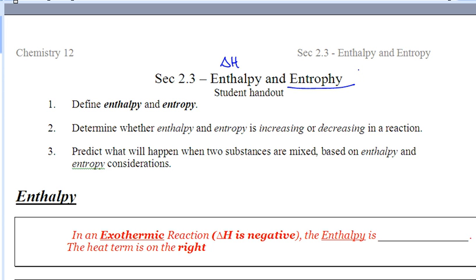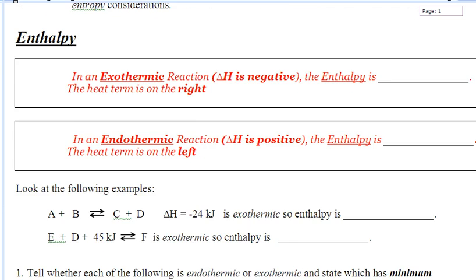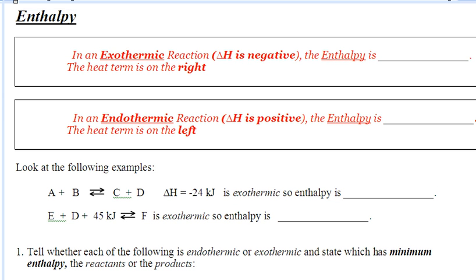We're going to compare these two definitions and how they affect equilibrium. Let's start with enthalpy — the one you're probably very good at. Enthalpy, remember, is delta H. It's the change in energy of the system. We've been drawing those on potential energy curves. In an exothermic reaction, delta H is negative — we know that — which means enthalpy is going to be decreasing.